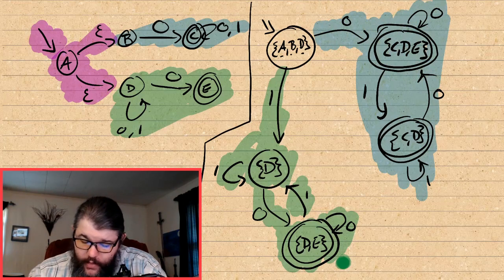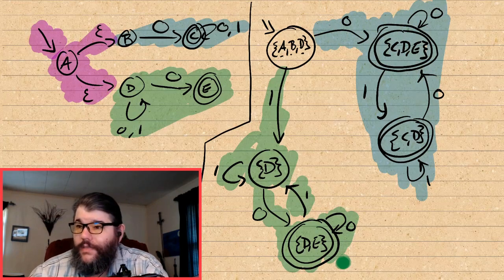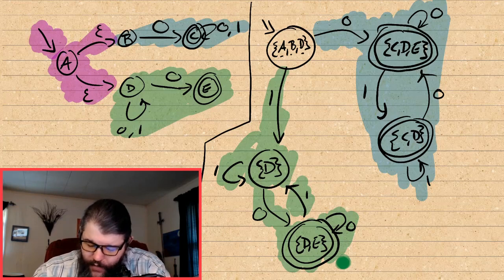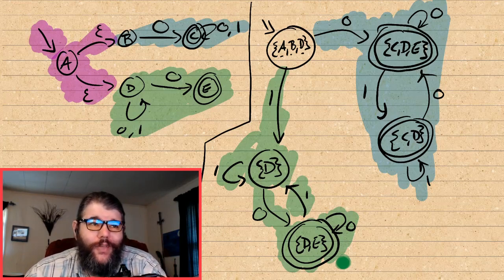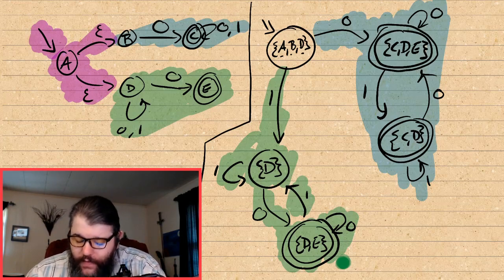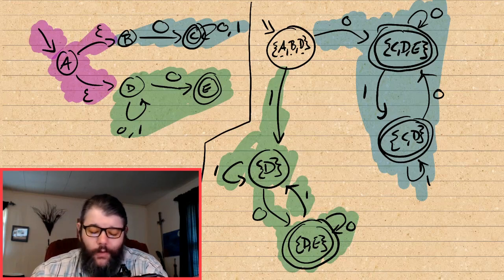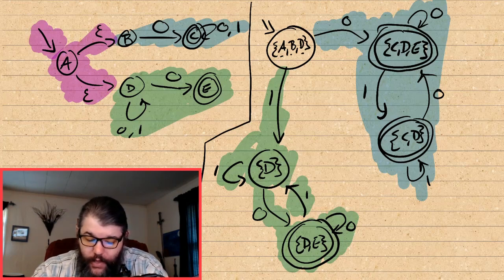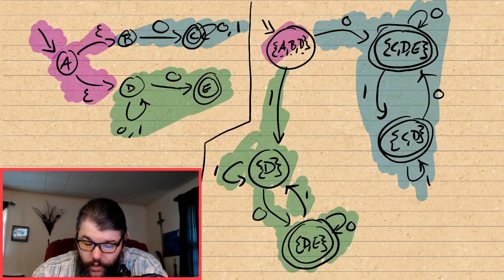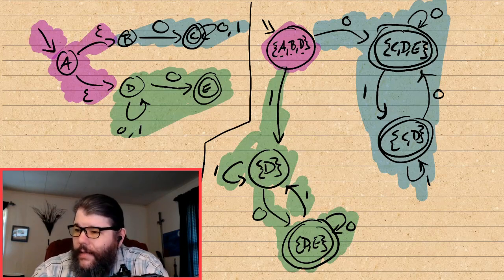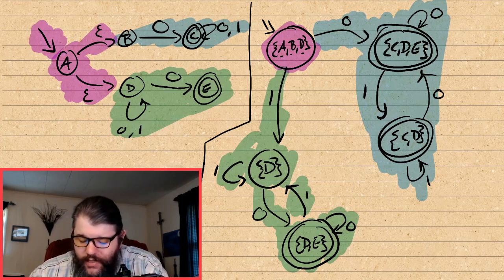The blue path represents any string that begins with a 0 being accepted. The bottom green path says a string must begin with a 1 and end with a 0. The reason these are separate in the DFA is because any string beginning with a 0 was already accepted — we saw the 0, ended up in the right half, and accepted. On the left path, if the string began with a 1, we still need to verify it ends with a 0. This is the magic of the subset construction — it collapses and merges these two languages together in an interesting way, and it will always work.